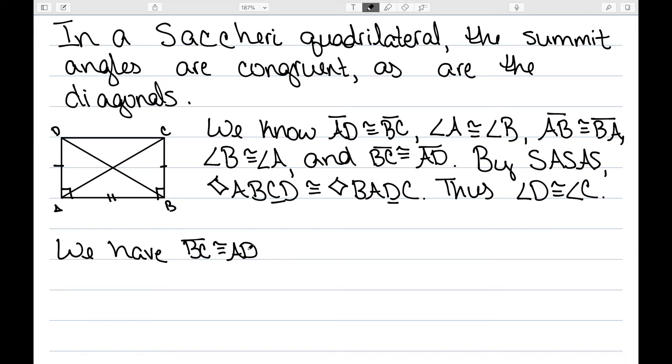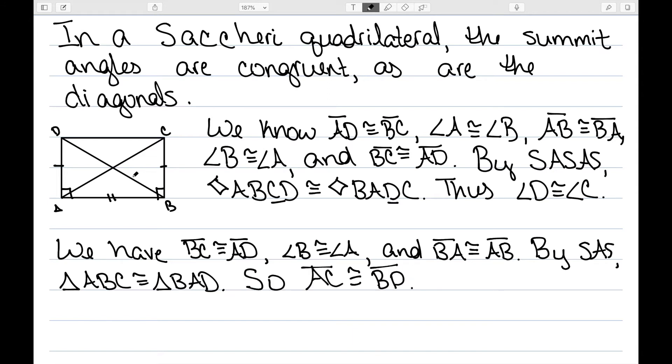Once again, we know that BC is congruent to segment AD. Angle B and A are congruent. And segment BA is congruent to segment AB since they are the same segment. This gives us that by side angle side, we have triangle ABC, this one at the bottom right, is congruent to triangle BAD, this one at the bottom left. This guarantees that side AC, the third side of the first triangle, is congruent to the third side of the other triangle. So AC is congruent to BD, which gives me that my diagonals are congruent.